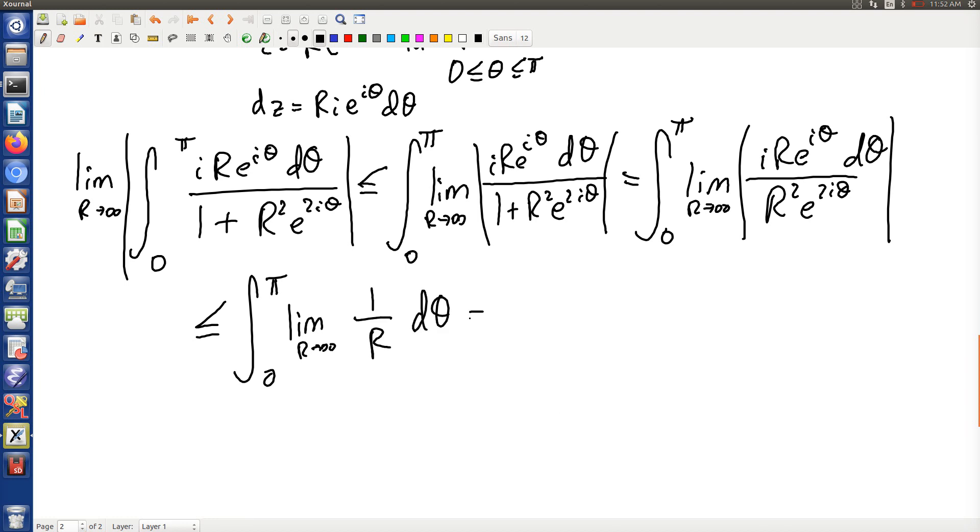d theta, which at the end of the day is 2 pi over r, which fortunately for us is zero.